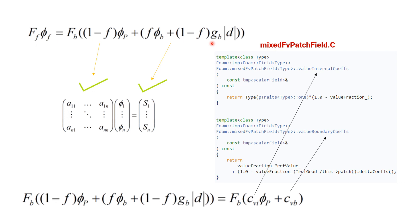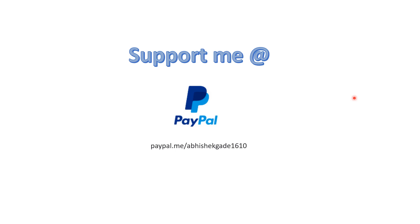We can verify the limiting cases: when f = 0, the mixed boundary condition reduces to the fixed gradient boundary condition; when f = 1, it reduces to the fixed value boundary condition. This confirms the mixed BC is the fundamental general form from which other boundary conditions are derived. Many boundary conditions in OpenFOAM depend on this — understanding it allows you to correct many codes. Please support the channel with likes, and thank you.